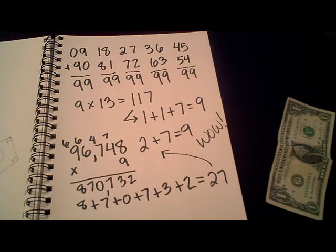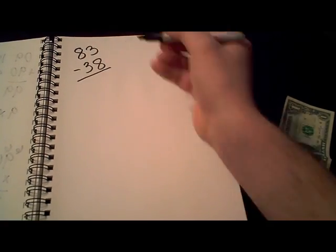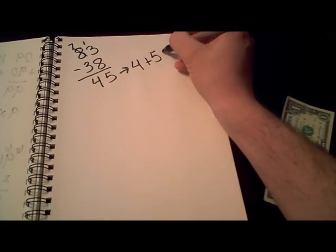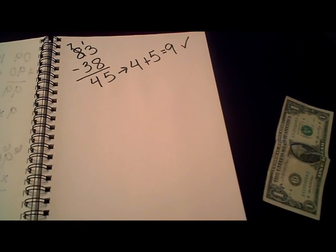And it turns out that even numbers that aren't multiples of 9 still have a strange relationship with 9. For example, if I take 83, mix up the digits, and subtract, I get 45, which I know is a multiple of 9 because 4 plus 5 equals 9.